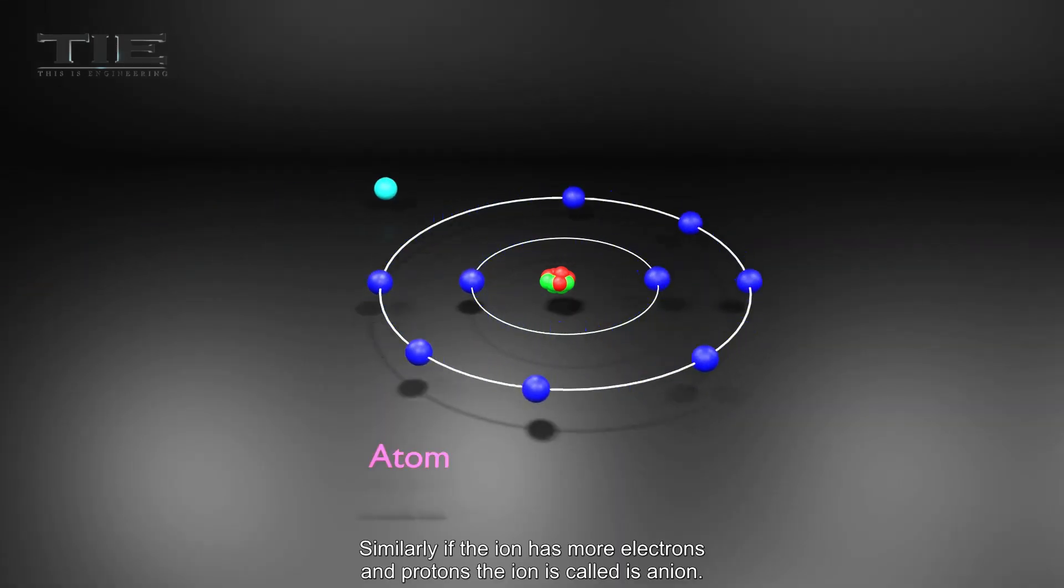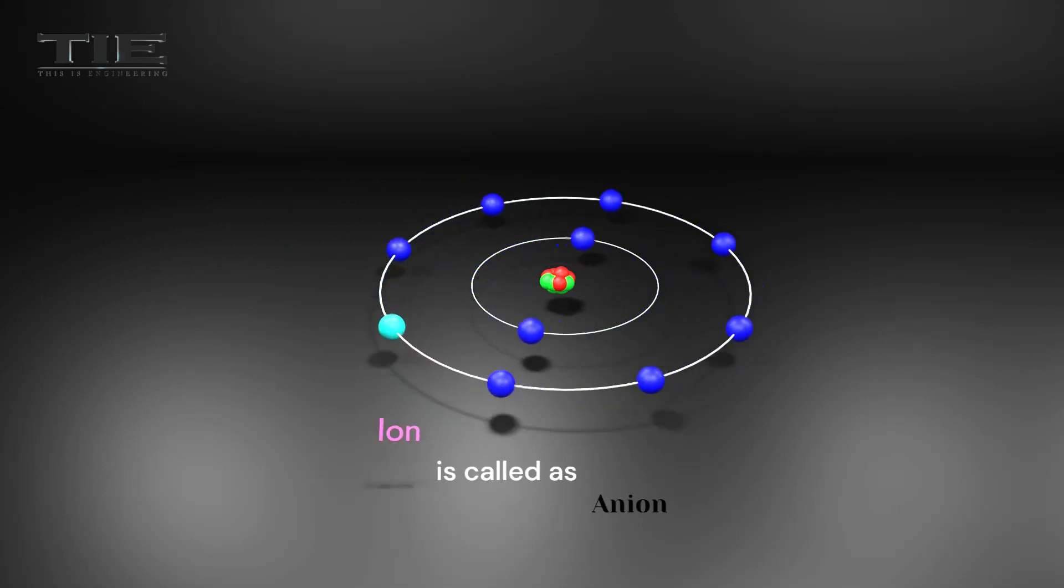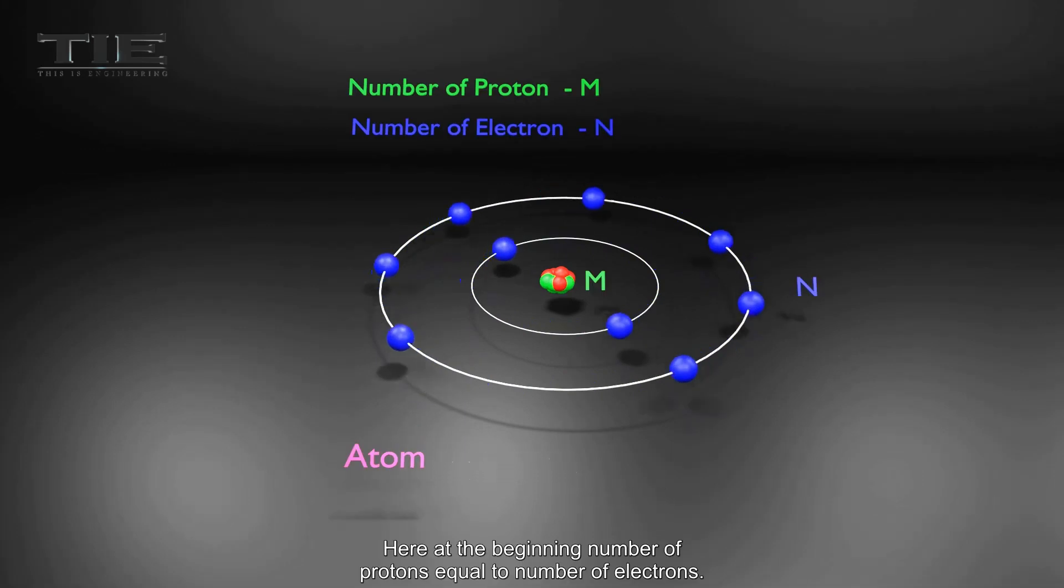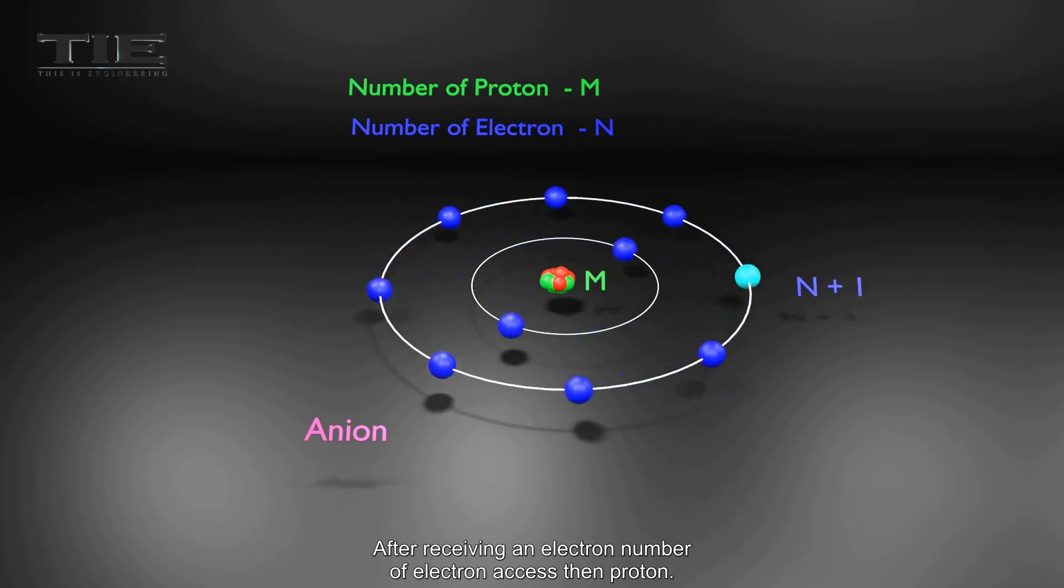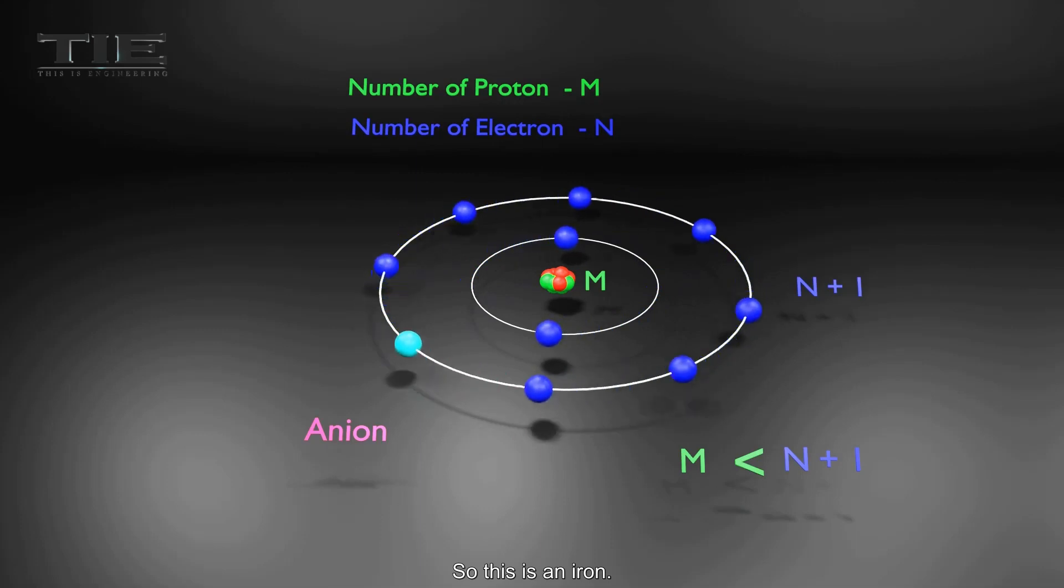Similarly, if the ion has more electrons than protons, the ion is called an anion. Here, at the beginning, number of protons equals number of electrons. After receiving an electron, number of electrons exceeds protons. So this is an anion.